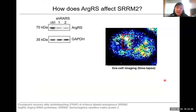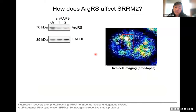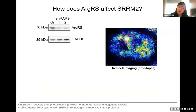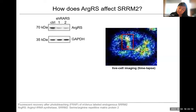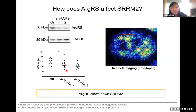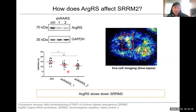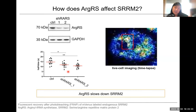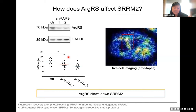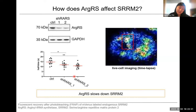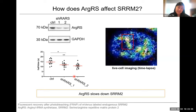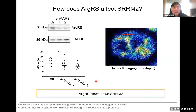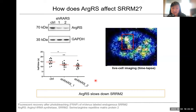We next wondered how ArgRS affects SRRM2. The easiest way was just to watch it — we tagged SRRM2 with a fluorescent protein, mVenus, then modulated ArgRS levels using a knockdown. Using fluorescence recovery after photobleaching to track SRRM2, we can see the intensity drop and look at recovery over time, calculating half-times of recovery that give us an idea of how fast SRRM2 is moving within the cell. What we found is that if we knock down ArgRS, we actually reduce the half-time of recovery, meaning ArgRS normally slows down SRRM2. If we have less ArgRS, SRRM2 is able to traffic faster in the cell nucleus.